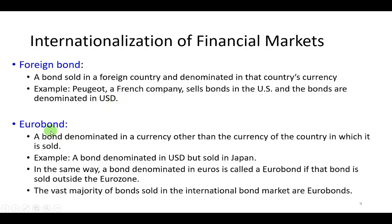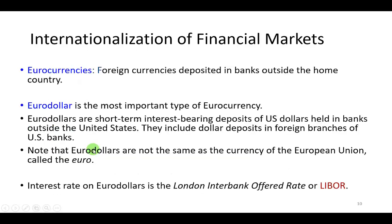A eurobond is a bond denominated in a currency other than the currency of the country in which it is issued. For example, a bond denominated in U.S. dollars but sold overseas in Japan would be called a eurobond. The prefix 'euro' has nothing to do with Europe as a continent or the euro currency — so don't confuse those two.